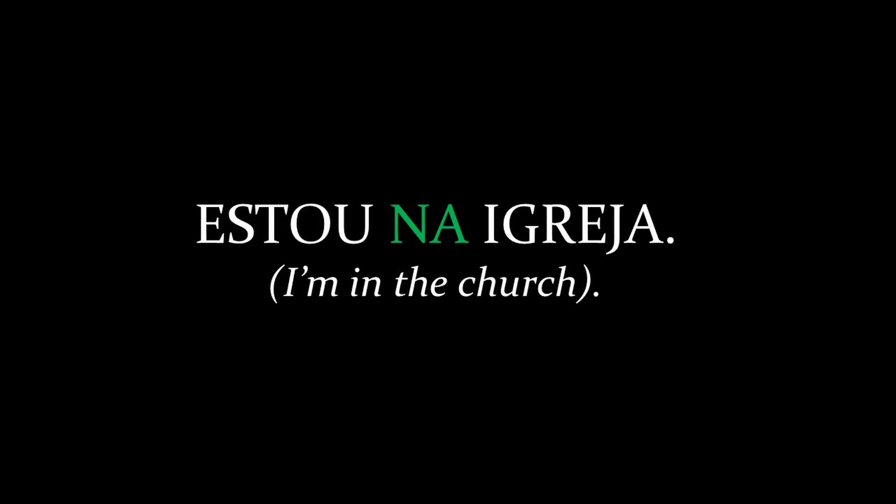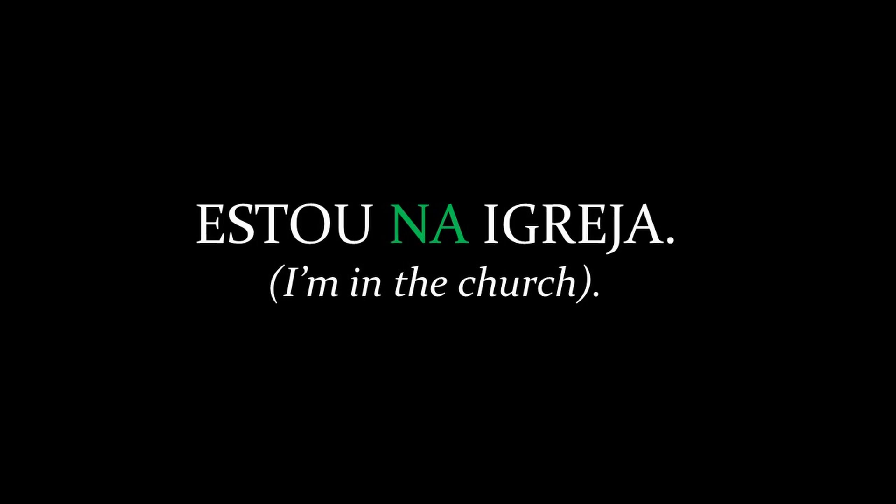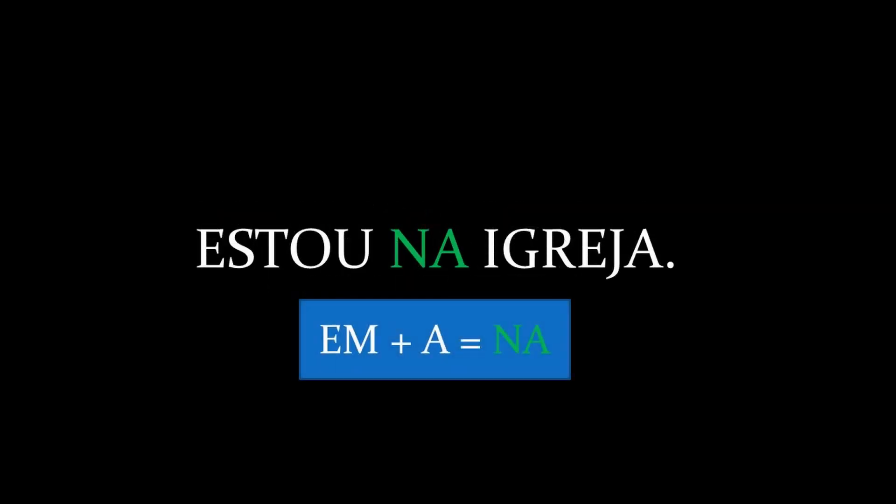When you forget to use an article before a noun, it's not a huge problem — you will be easily understood. Nevertheless, it is essential to use an article when it joins with a preposition, like em, which means 'in' or 'at'. For example, estou na igreja. Preposition em joins with definite article a, which gives na.